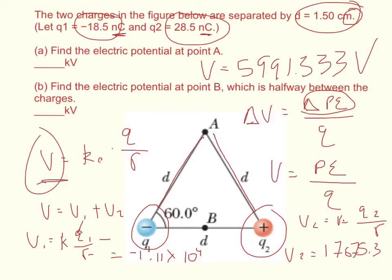Now I know what you're probably thinking. You're probably thinking, well, at point B, it must be 0 because it's halfway in between the two charges. That is almost correct if the two charges were equal and opposite signs, or equal signs.